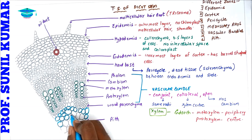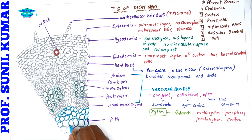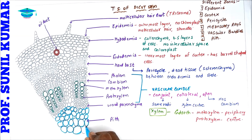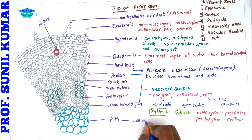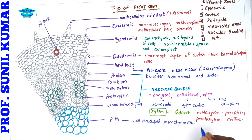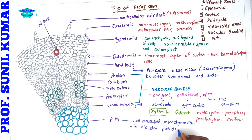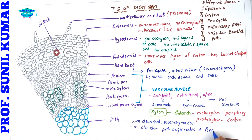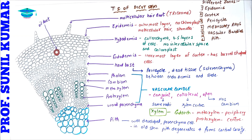The large parenchyma cells form the pith of the dicot stem. The pith is well developed and made up of parenchyma cells. In old stems, the pith generally degenerates and forms a central cavity.